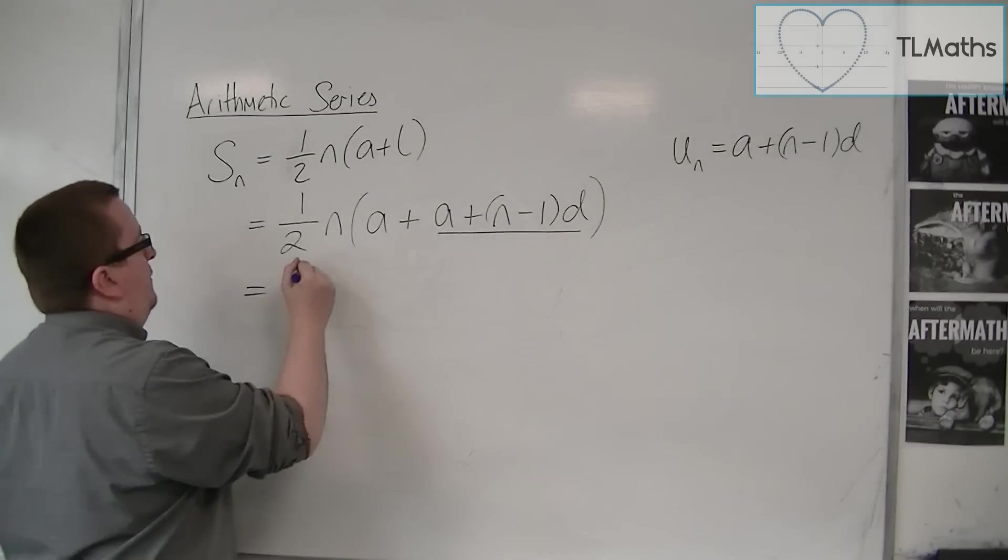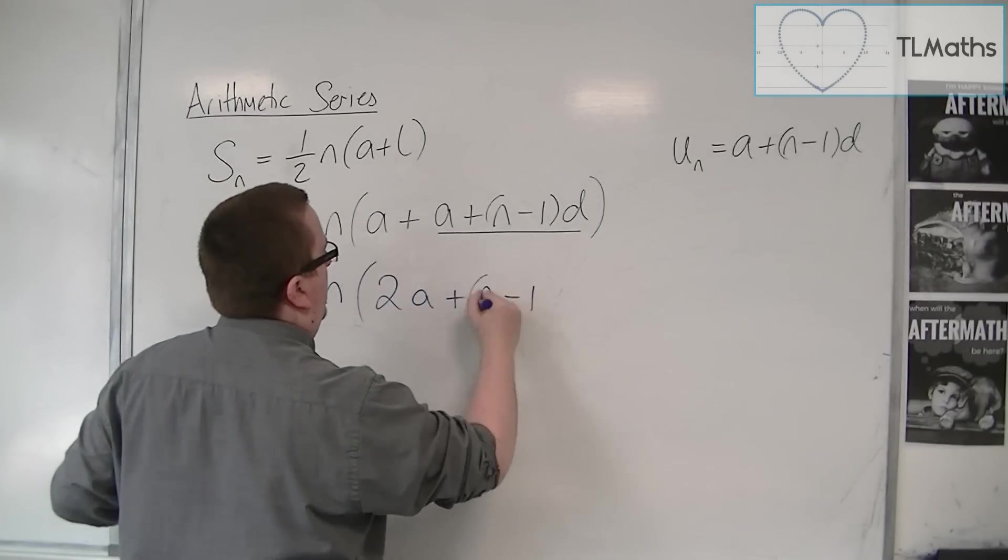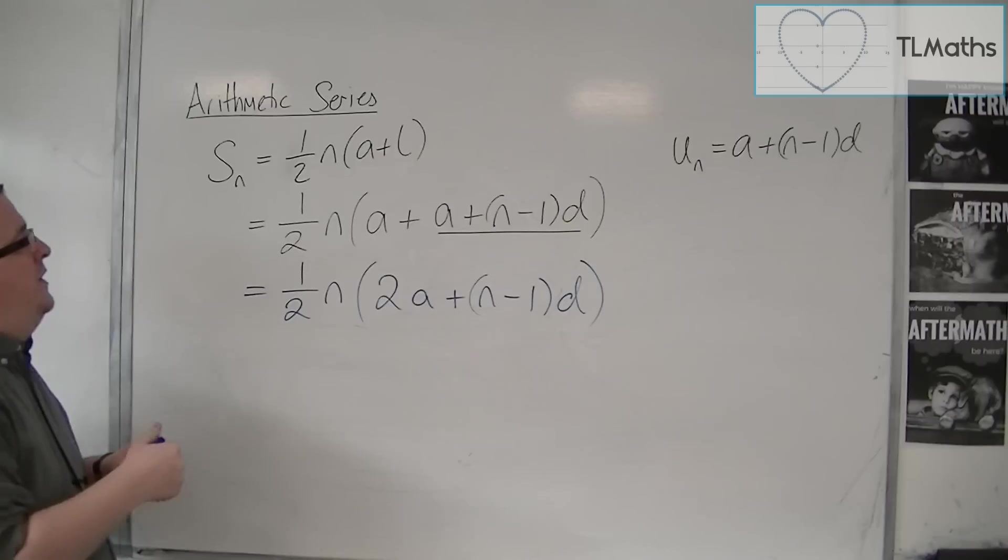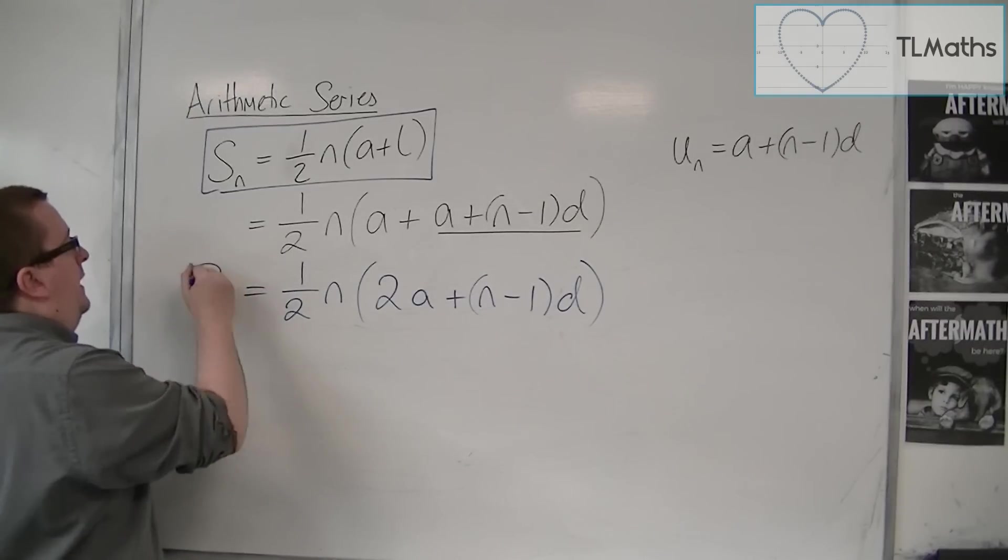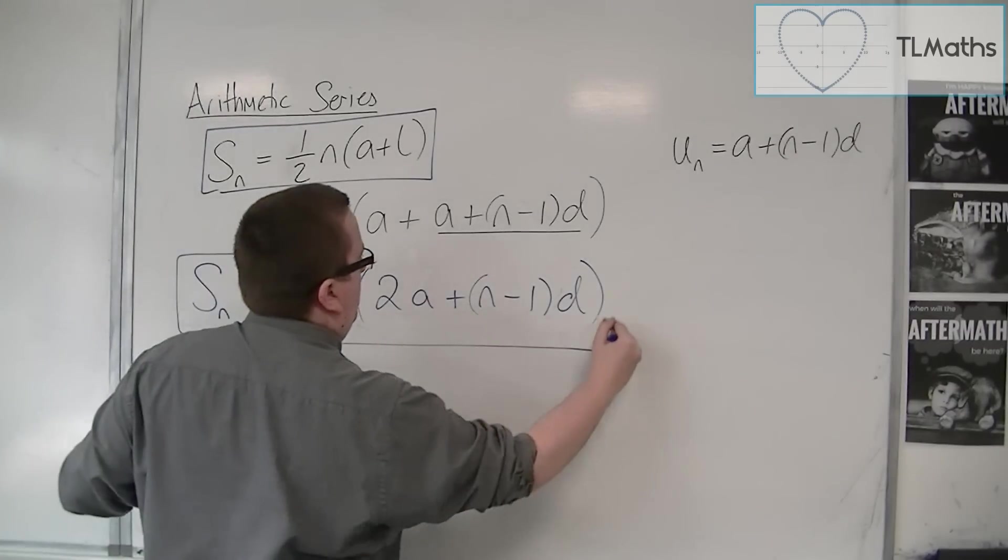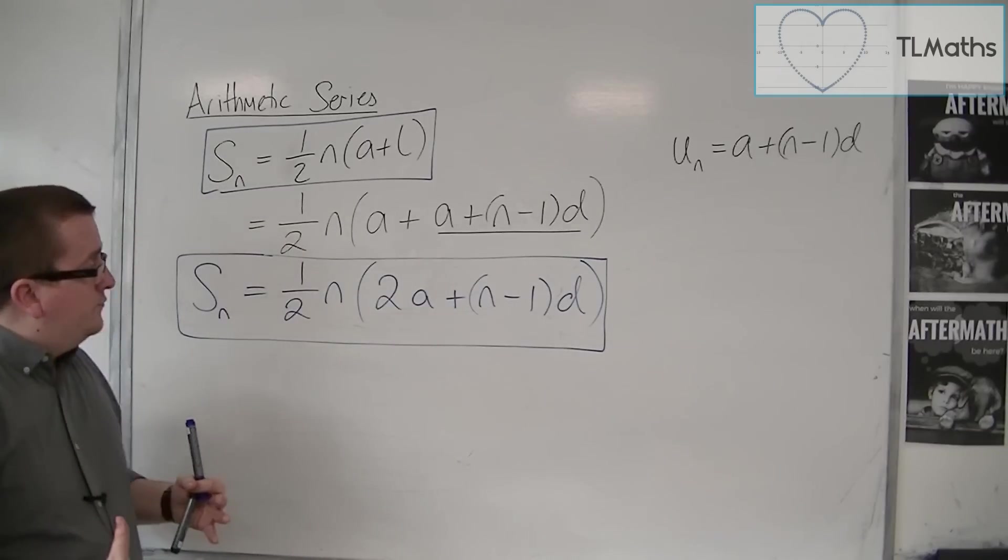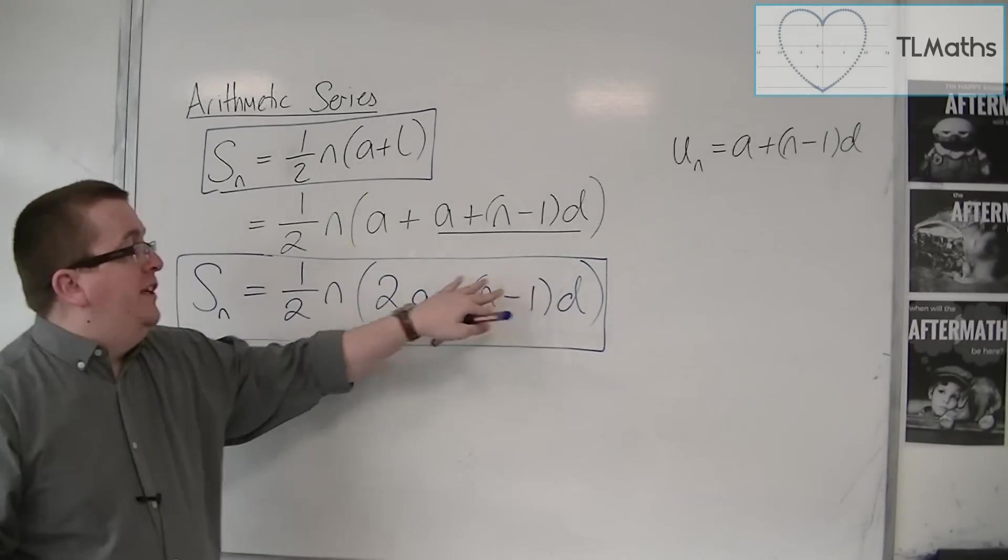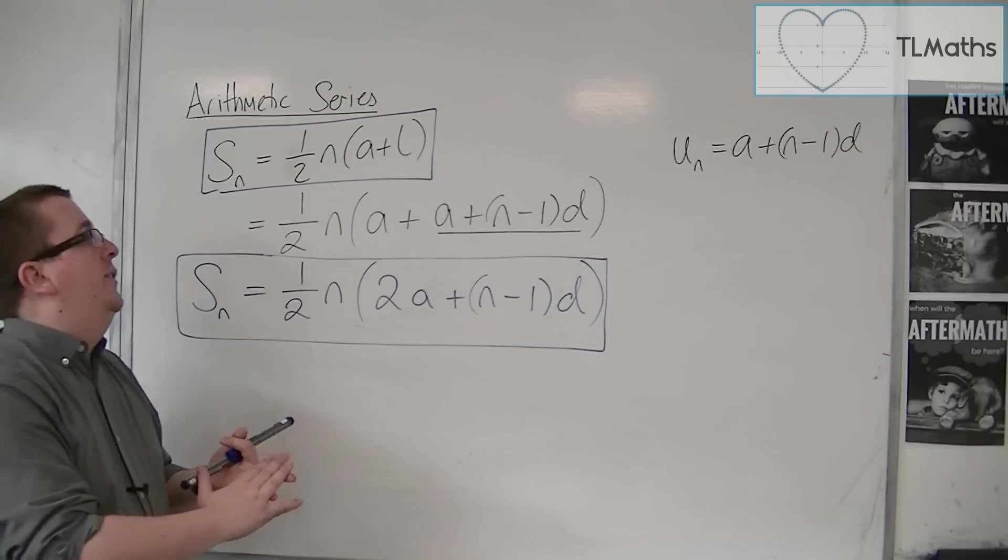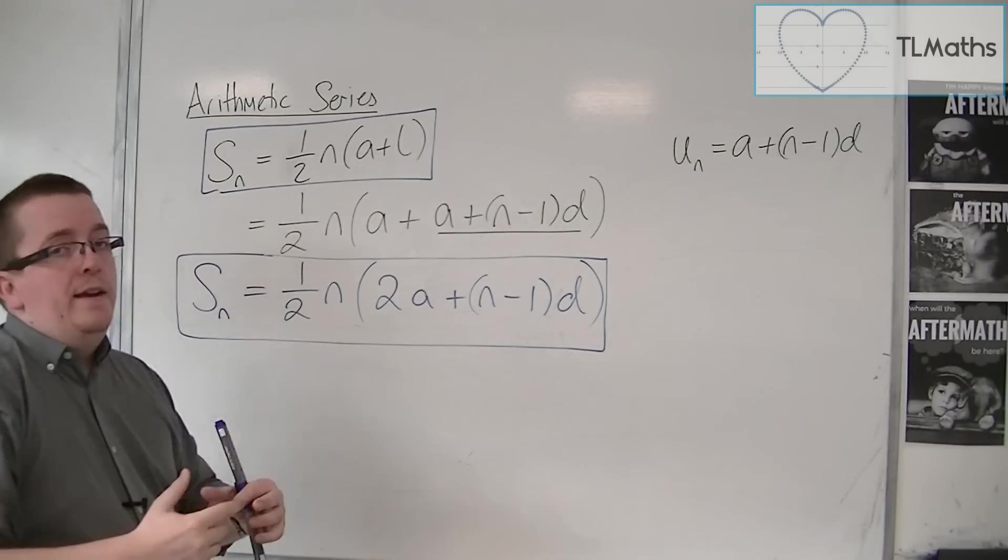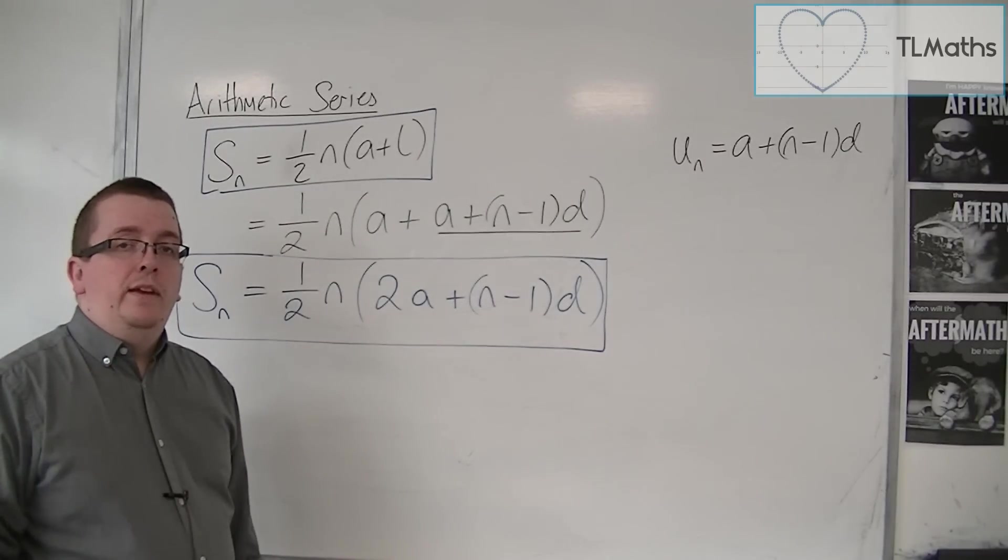What we have here is one-half n times a plus a is 2a plus n minus 1 times d. It is these two formulas, so S_n is one-half n times a plus L, and S_n is one-half n times 2a plus n minus 1 times d, that are both given to us in the formula booklet. This one is more useful because I more regularly have the first term and the common difference, but if I know what the last term is, then it's pretty straightforward to use that one instead. I'm going to show you some examples of this in the next video.